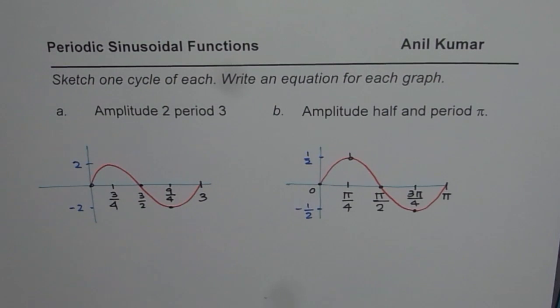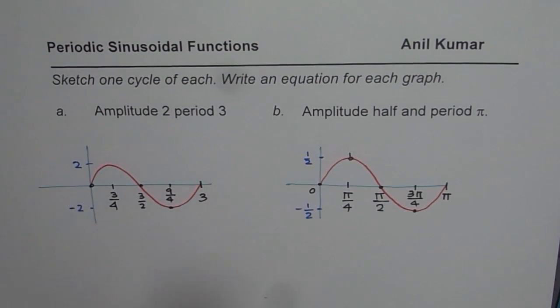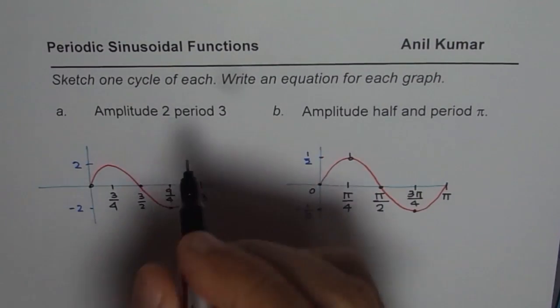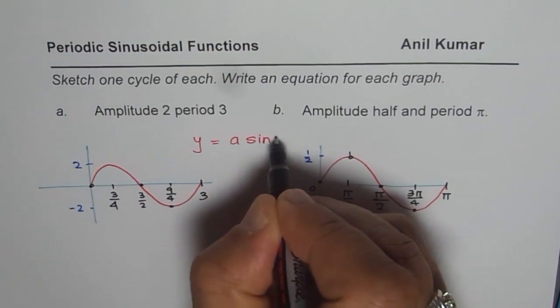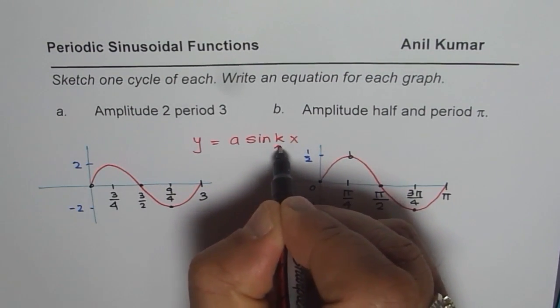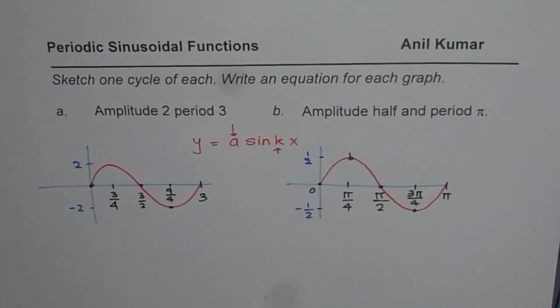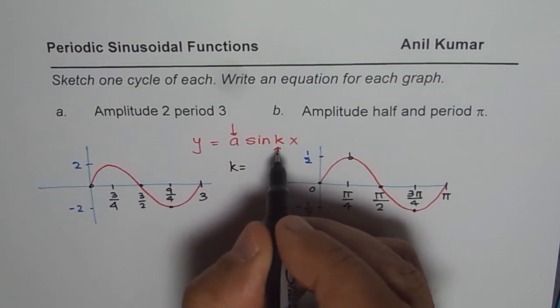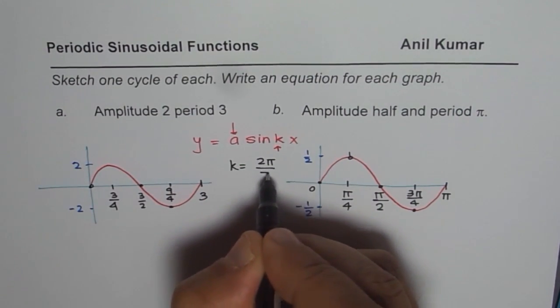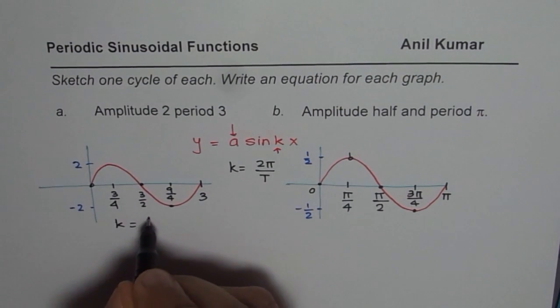Now, we need to write equation of these functions. Time period is related to, well, let me first give you a general equation. Then we'll move forward from there. So general equation for a sinusoidal function whose amplitude and period is given to us should be y equals to a sine kx. So now where k is one which is related with period and a is related with the amplitude. So how to find k from the period? The relation is that k is equals to 2 pi divided by the time period.